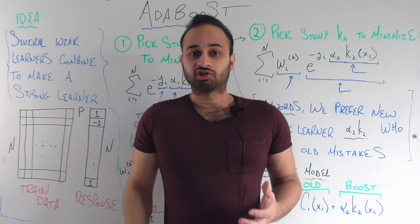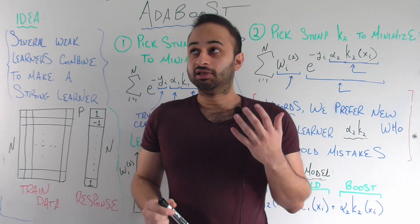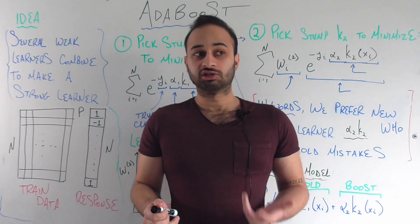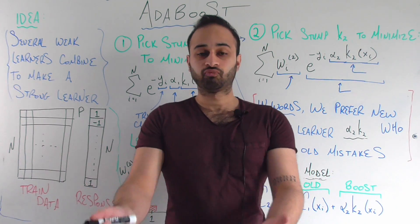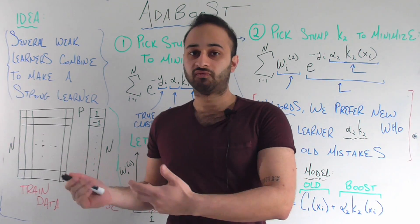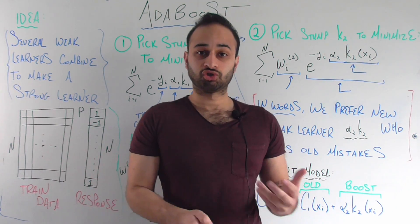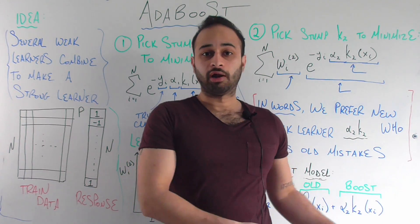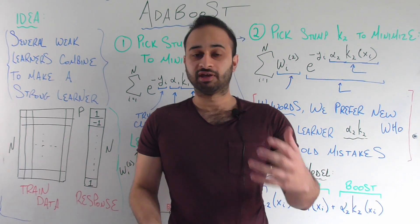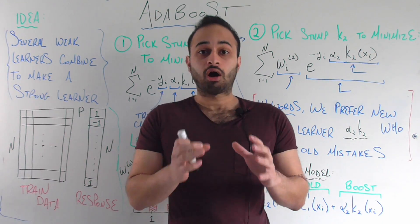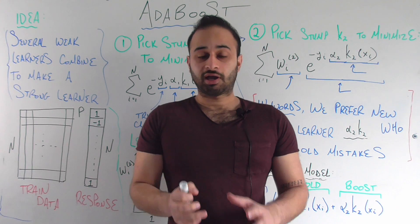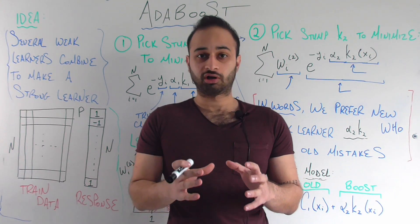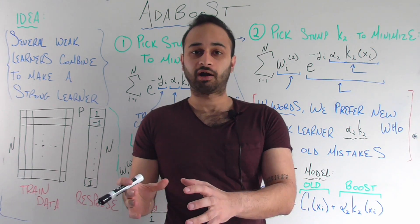So what that means in a nutshell is that the exact type of learner you're using for AdaBoost is really up to you. The most common one and the one we'll look at in this video is decision trees, but you can really use any type of classifier you want — SVM, k-nearest neighbor — as long as at each step you're building a weak version of that classifier.